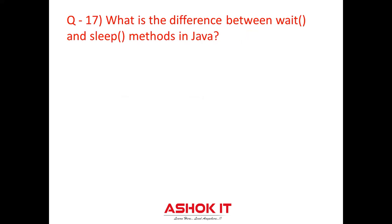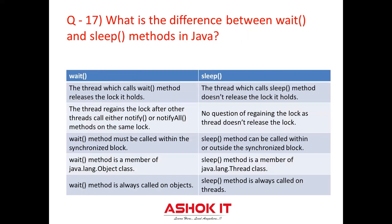Question seventeen: What is the difference between the wait and sleep methods in Java? The thread which calls the wait method releases the lock it holds, whereas the thread which calls the sleep method does not release the lock it holds. The thread regains the lock after other threads call either notify or notifyAll on the same object. With sleep, there is no question of regaining the lock since the thread doesn't release it. The wait method must be called within a synchronized block, but the sleep method can be called within or outside a synchronized block. The wait method is a member of java.lang.Object class, where the sleep method is a member of java.lang.Thread class — wait is called on objects, while sleep is called on threads.